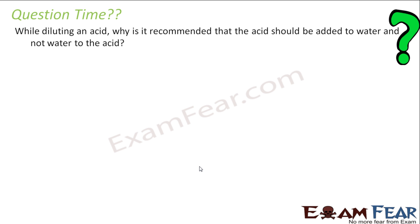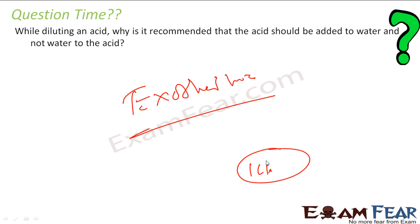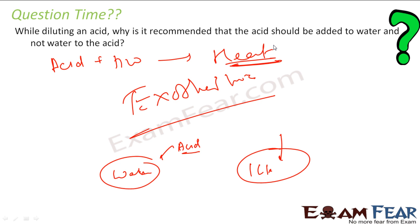While diluting acid, why does it recommend that acids should be added to water and not water to acid? Why? Because this whole thing is an exothermic process. It gives lot of heat. So if you add, if you have a huge acid, let's suppose 1 liter, and you put some water in this, it may burn, it may burst. So we should avoid this, and we take water, and then in that we put acid slowly and stir. This is all because this reaction, acid plus water, is highly exothermic. It gives huge heat. That's the reason why we don't recommend that.